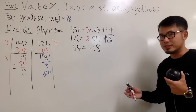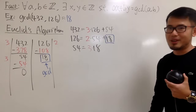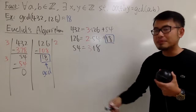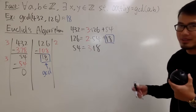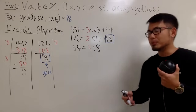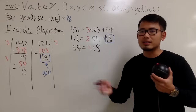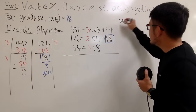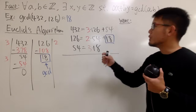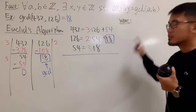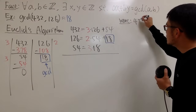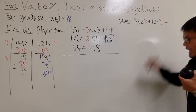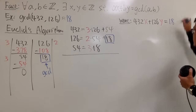This is the usual way textbooks present it, and we actually need to use this form because I haven't shown you how to find x and y yet. We have to look at these equations and reverse the steps to find integer x and y. Sometimes you can eyeball it, but for big numbers like this, let me show you. We want: 432 times x plus 126 times y equals 18.